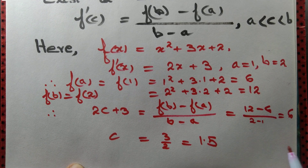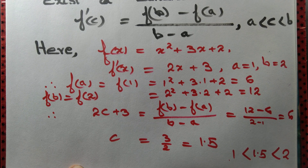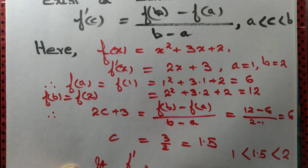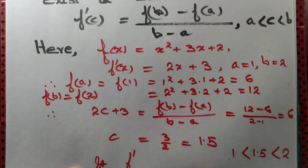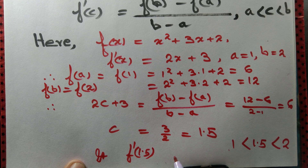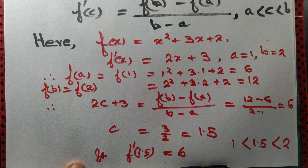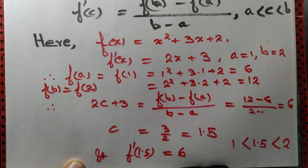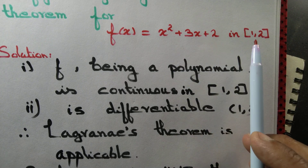Is 1.5 greater than 1? Yes, 1.5 is greater than 1 and less than 2, so 1.5 lies between the endpoints of the interval. And we can verify: f'(1.5) = 2×1.5 + 3 = 3 + 3 = 6, which equals [f(b) − f(a)] / (b − a). We have determined such a constant c with f'(c) = [f(b) − f(a)] / (b − a) and c lying between 1 and 2. Thus we have verified Lagrange's mean value theorem for f(x) = x² + 3x + 2 on the interval [1, 2].